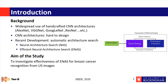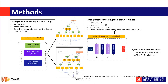In this study, we want to investigate the effectiveness of INAS for breast cancer recognition from ultrasound images. We adapted a micro-search space of INAS and generated two optimal cells. Then we designed two CNN architectures for breast cancer classification from ultrasound images.